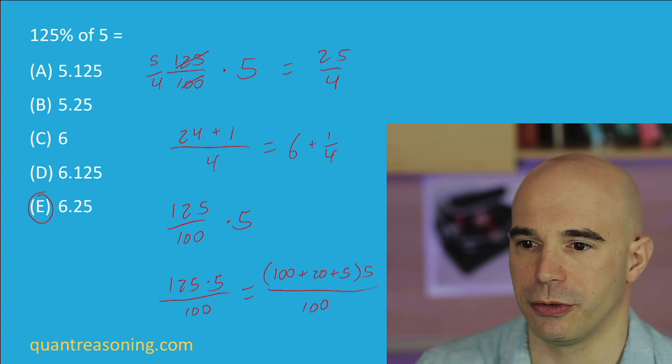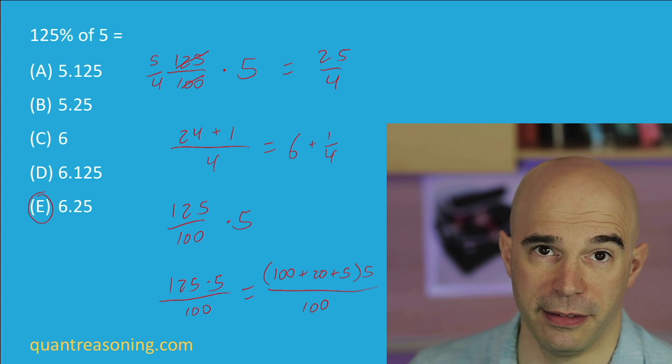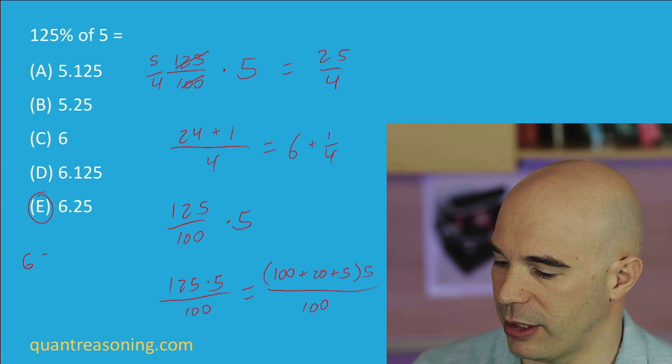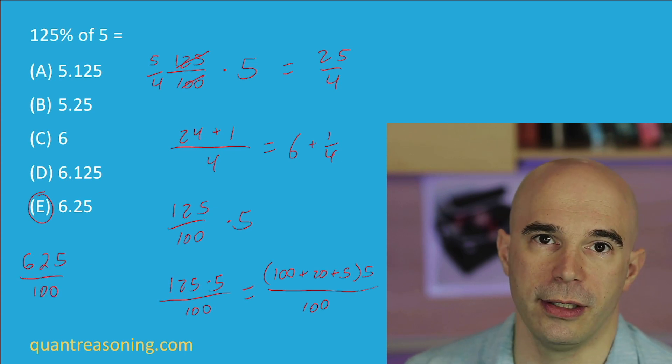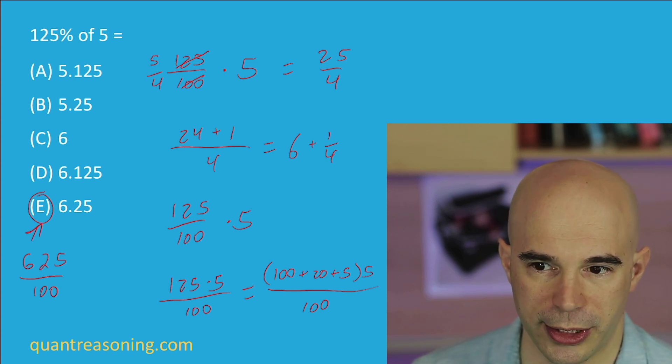So I would be multiplying each of them individually by 5. 100 times 5 is 500, 20 times 5 is 100, and 5 times 5 is 25. So you end up with a total of 625 over 100. And now you just stick the decimal point in the appropriate position, and you get answer choice E.